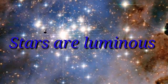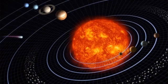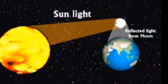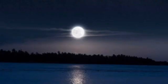Do you know stars are luminous? Planets and satellites are non-luminous. Sunlight reflects from the surface of the moon. The moon light reaches us. That is how we can see the moon. So we call this light as moon light.